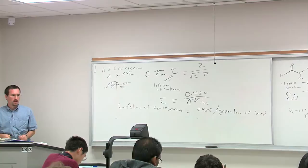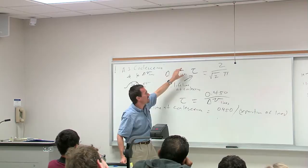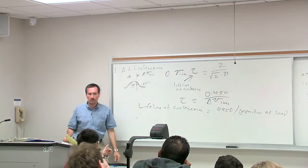This boils down to a simple equation: tau at coalescence equals 0.450 divided by delta nu of the lines. In other words, the lifetime at coalescence is equal to 0.450 divided by the separation of the lines in hertz at lower temperature.